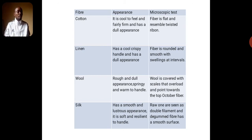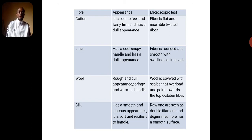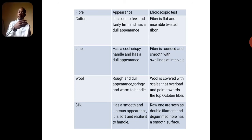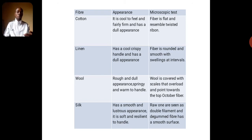Cotton in appearance is cool to feel and fairly firm, and it has a dull appearance. When you look at it, it is usually dull, but when you touch it, it has a fairly firm feel. When viewed under the microscope, cotton fiber appears flat and resembles a twisted ribbon.